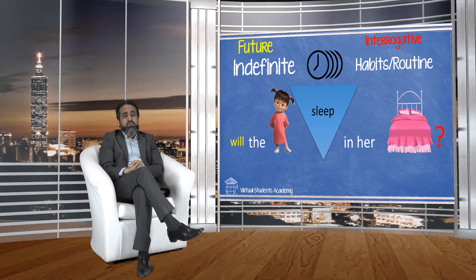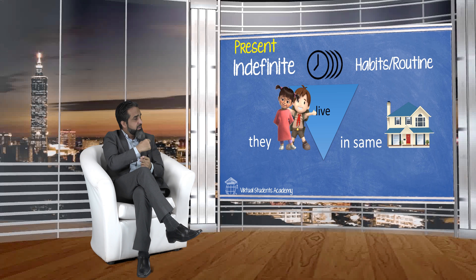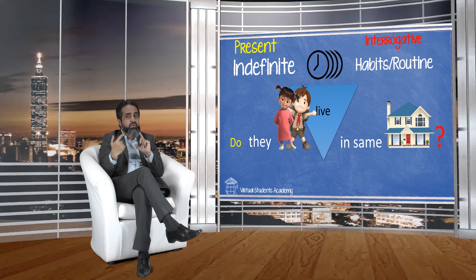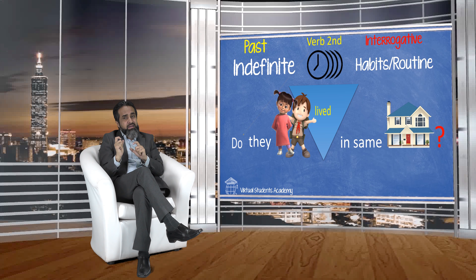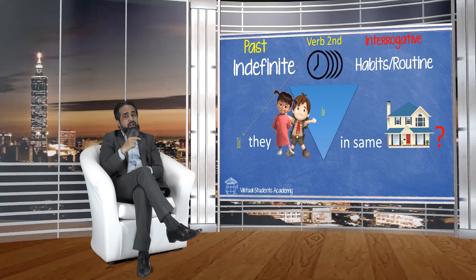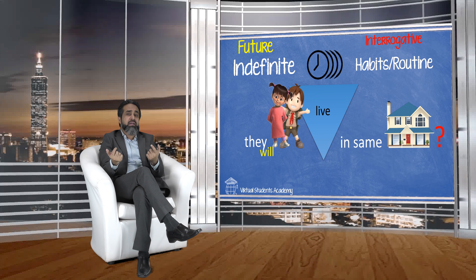Now let's look at a plural example. Present indefinite: 'They live in the same house' — no change with 'do' for plural. 'Do they live in the same house?' Past indefinite: 'They lived in the same house' — 'did' is added and 'lived' reverts to first form: 'Did they live in the same house?' Future indefinite: 'They will live in the same house' becomes 'Will they live in the same house?'